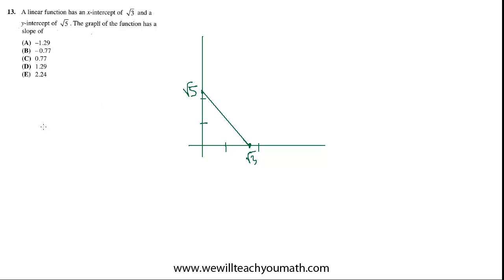And they want to know the slope. Well, what is slope? Slope is change in y over change in x, or rise over run. So how do you get from this point to that point? As x increases, you go down root five units and over root three units. And it should have a negative slope, right? Because it's going down the hill.